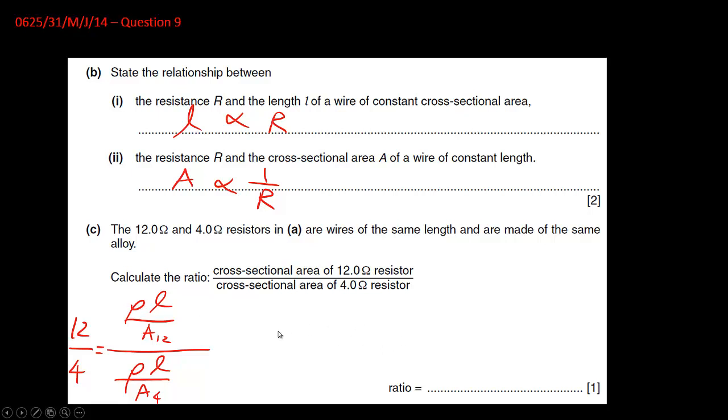After that, you'll find, of course, since they are having the same material, so this one will cancel out with this one, the length will also be canceled out as well. And therefore, you can have only these two A.